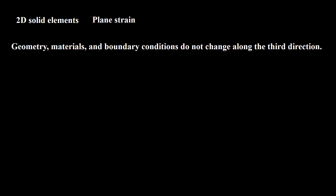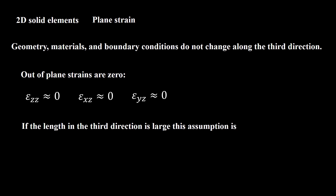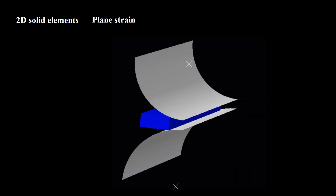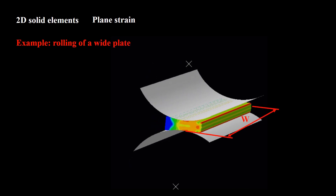Small thickness is crucial for plane stress condition. What is the difference between plane stress and plane strain problems? In both types the geometry, materials, and boundary conditions do not change along the third direction. But while in plane stress the out-of-plane stresses are zero, in plane strain problems the out-of-plane strains are zero. This assumption is usually valid when the length of the part in the third direction is remarkably bigger than the in-plane dimensions. For example, in rolling of a wide sheet we can assume plane strain conditions if the width is significantly bigger than the thickness. The last subcategory of 2D solid elements is the axisymmetric element.